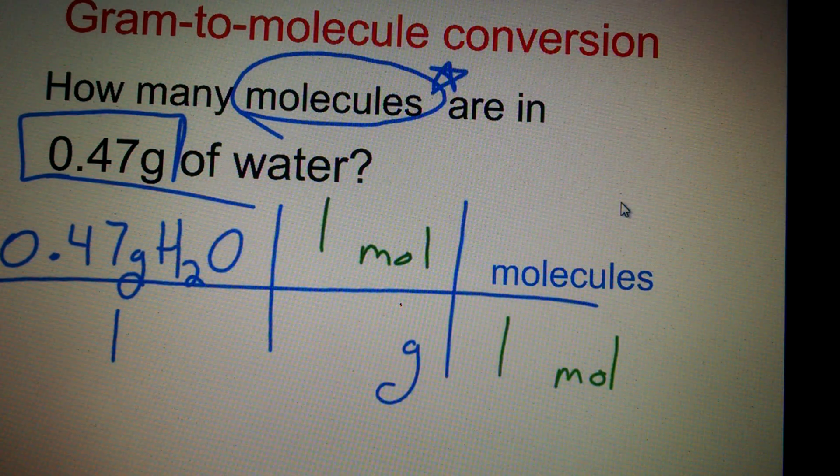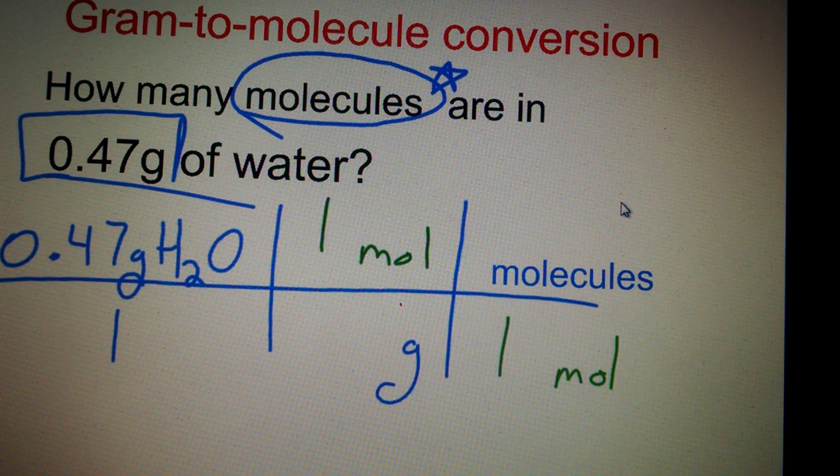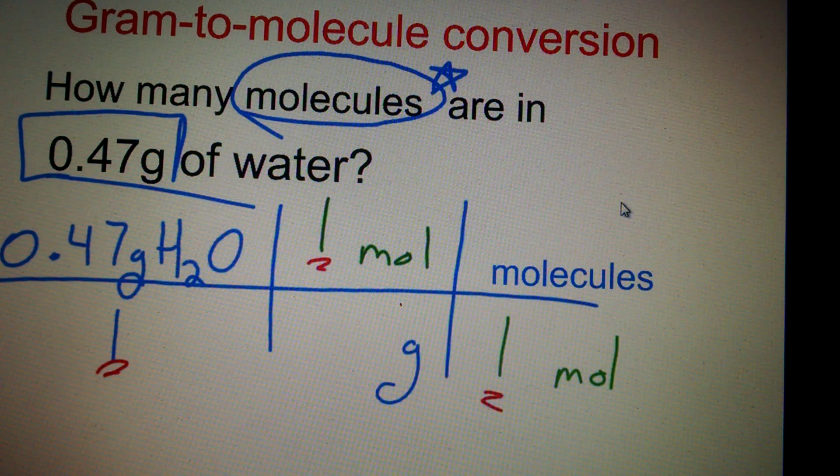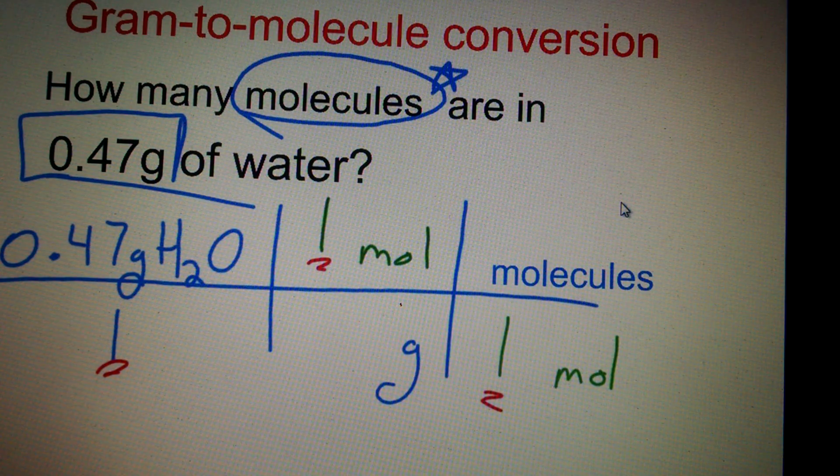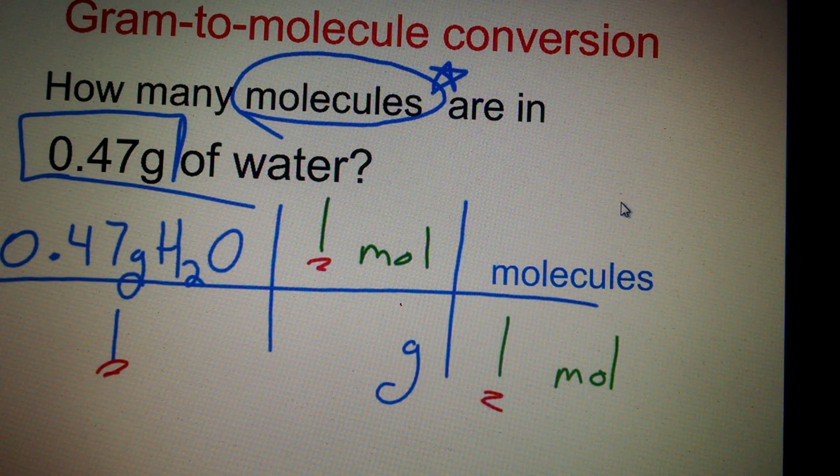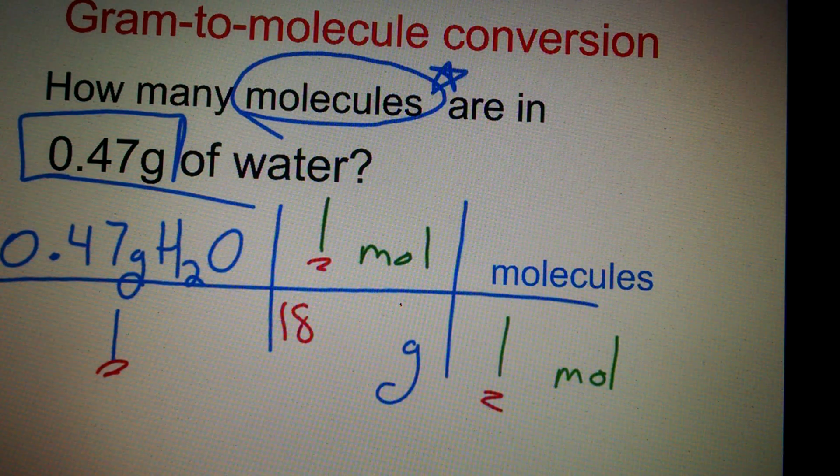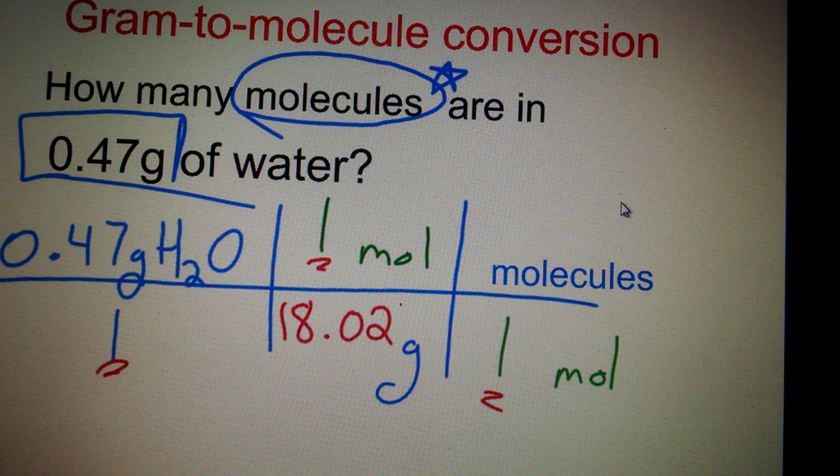And we're going to put ones there. So we have, again, the triforce of ones, the little triangle of ones. So in one mole of water, that's just the molar mass of water. So we're going to plop down 18.02 grams.